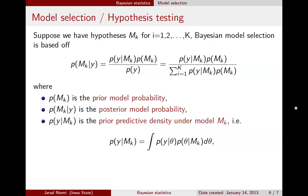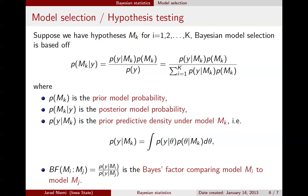The last terminology I want to introduce is the Bayes factor. The Bayes factor is the ratio of the prior predictive densities for model i versus model j, and we call it the Bayes factor comparing model i to model j.